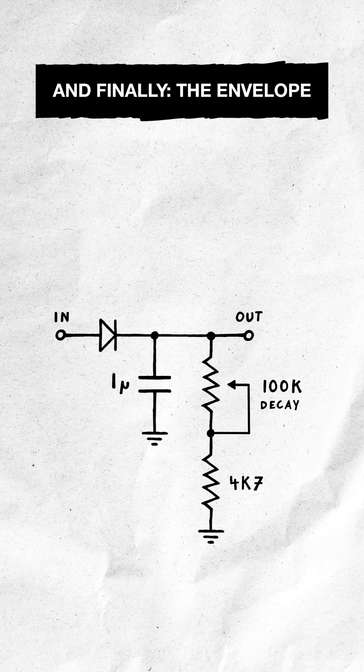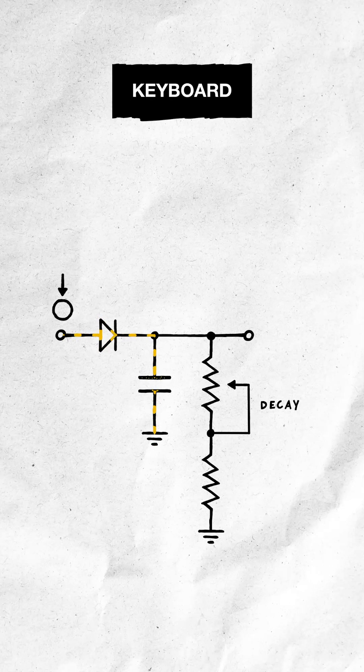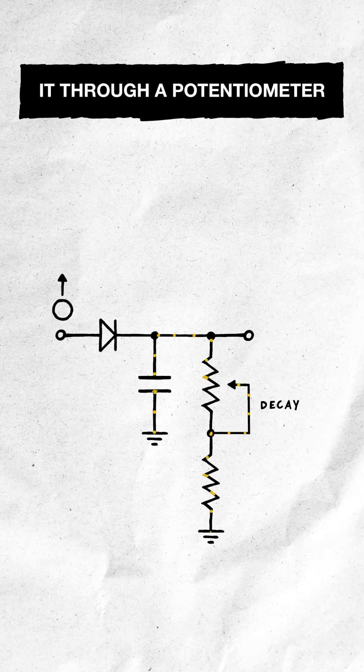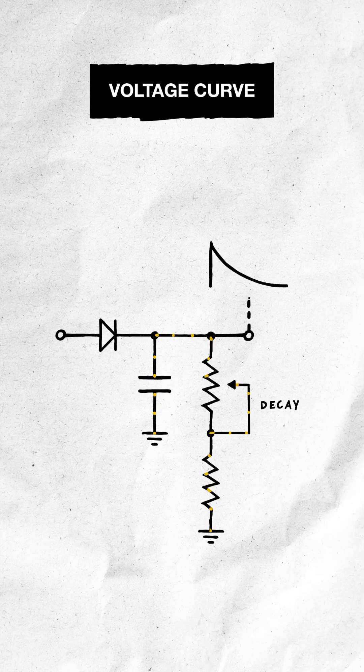And finally, the envelope. It simply charges a capacitor when I push a key on my keyboard, and then slowly discharges it through a potentiometer to create a falling voltage curve.